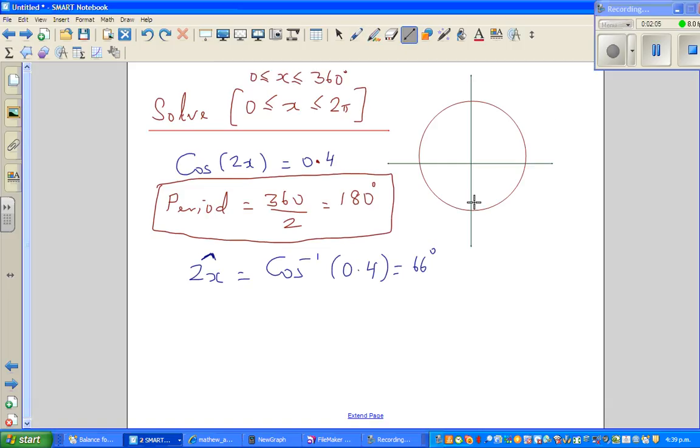Let me write the CAST formula. C-A-S-T stands for cos, all, sine, tan. In the first quadrant, everything—sine, cos, and tan—are positive. We're looking at cos, which is positive in the first and the fourth quadrant.